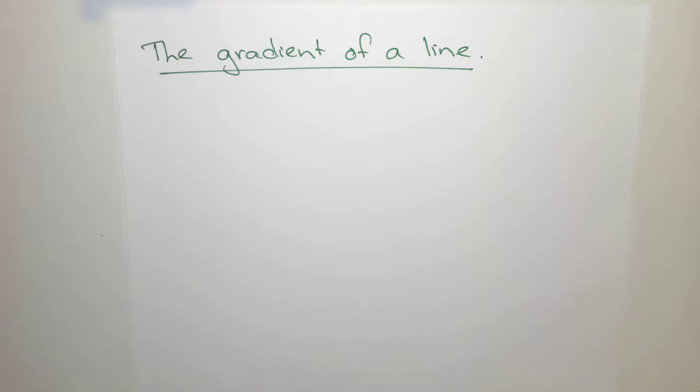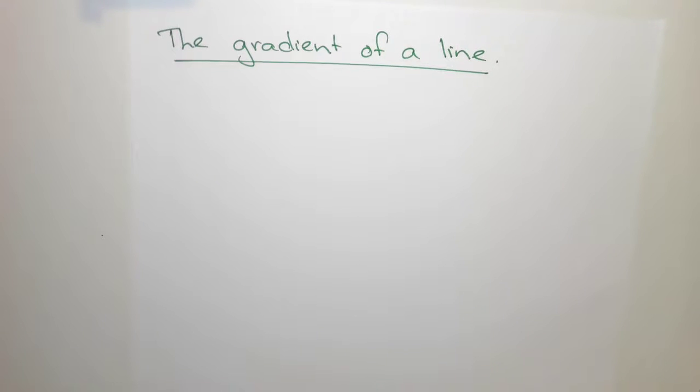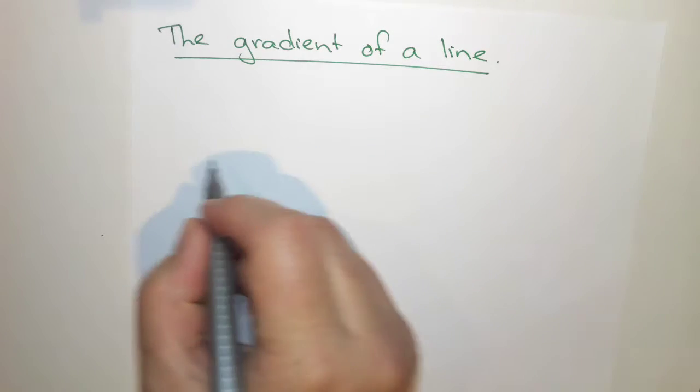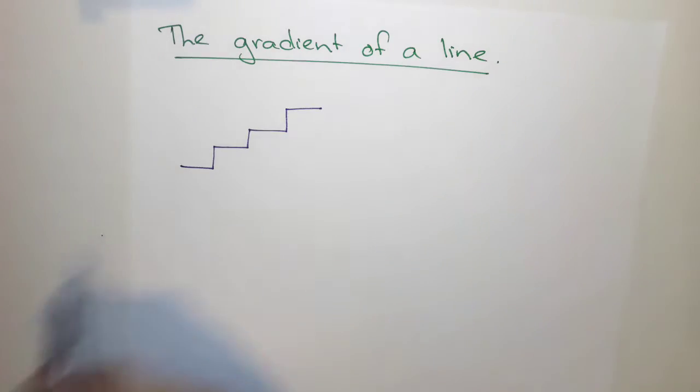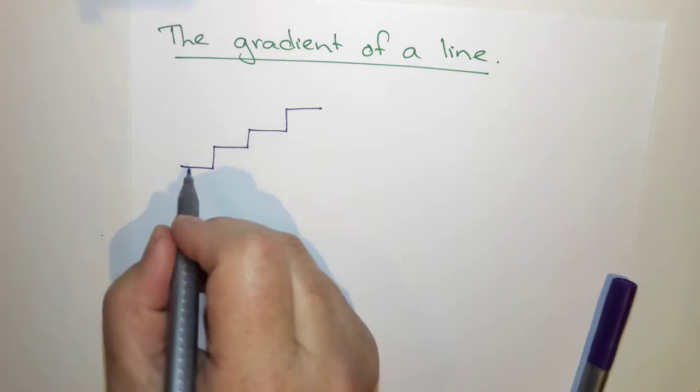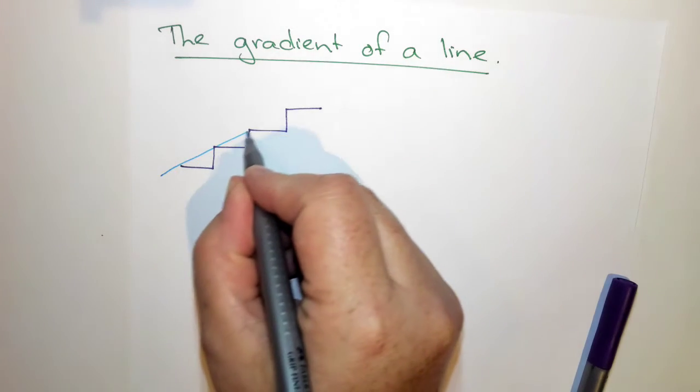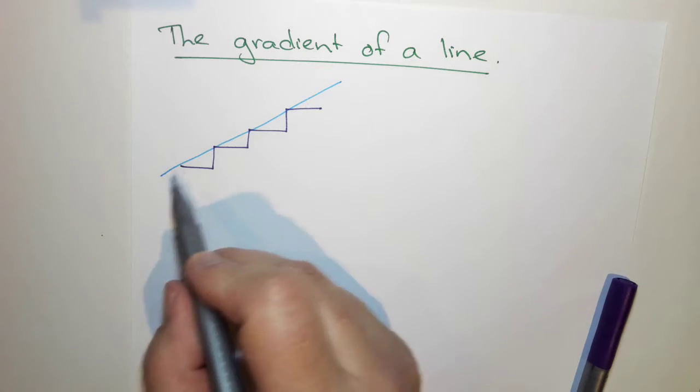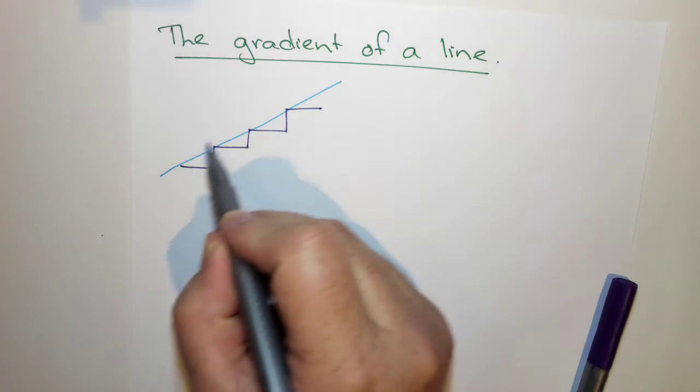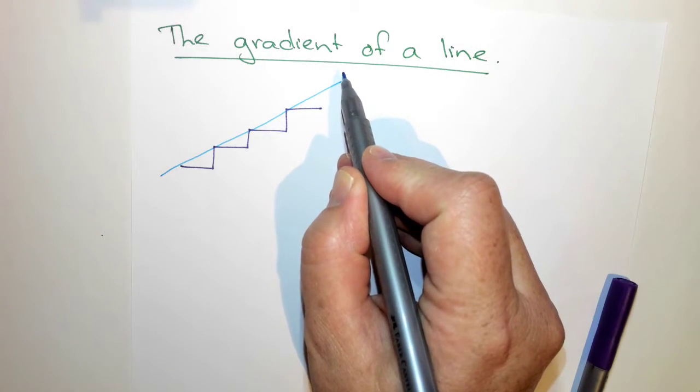We want to have a look here at the gradient of a line and what that means. So I want you to think for a moment about walking up stairs. As you're walking up the stairs, most stairs move up at a steady rate. And so that means that we would have a kind of slope that we're walking upwards.